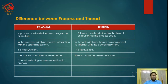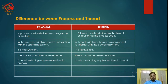Context switching requires more time in a process, but context switching requires less time in the case of a thread. The process needs more time for termination.